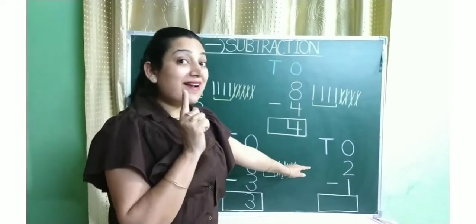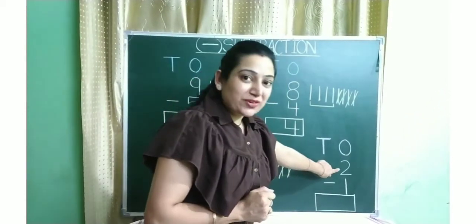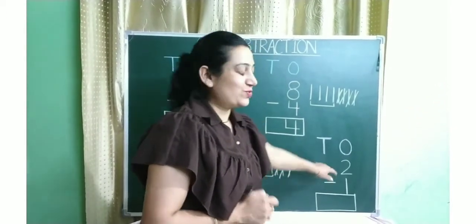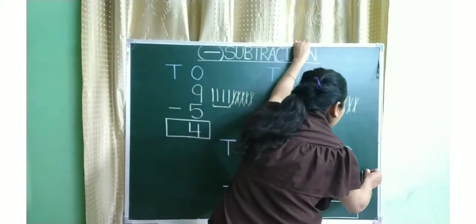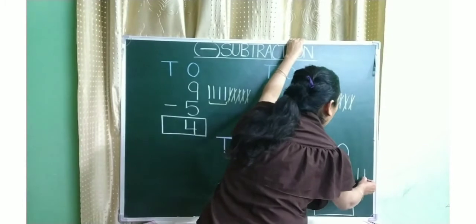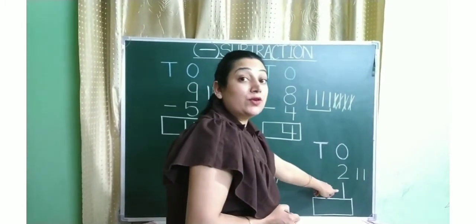Now we will see our last sum. Which number is this? Number 2. So we will make 2 standing lines. 1 and 2. And which number is this?